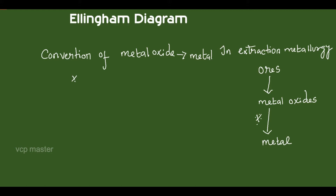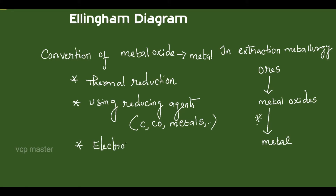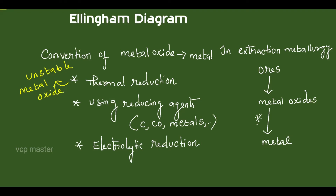The first one is thermal reduction, that is, by mere heating, you can convert a metal oxide to metal. The second method is by using reducing agents — generally coke, carbon monoxide, or some metals. The third method is by electrolysis. The most unstable metal oxides are reduced by thermal reduction, the most stable metal oxides are reduced by electrolysis, and moderately stable metal oxides are reduced by using reducing agents.